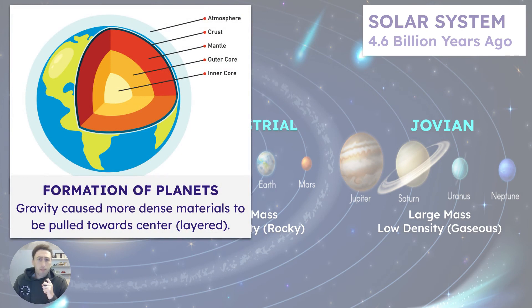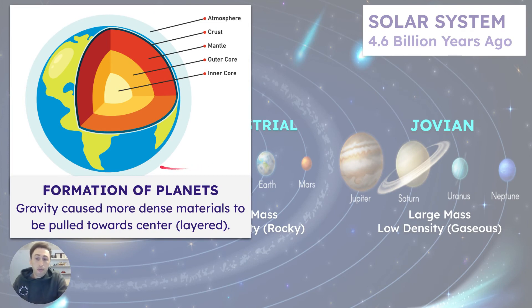Regarding the formation of the planets, you should know that gravity caused more dense materials to be pulled towards the center, causing the planets to become layered, with denser materials moving more to the center. We'll discuss this further later on in part two.